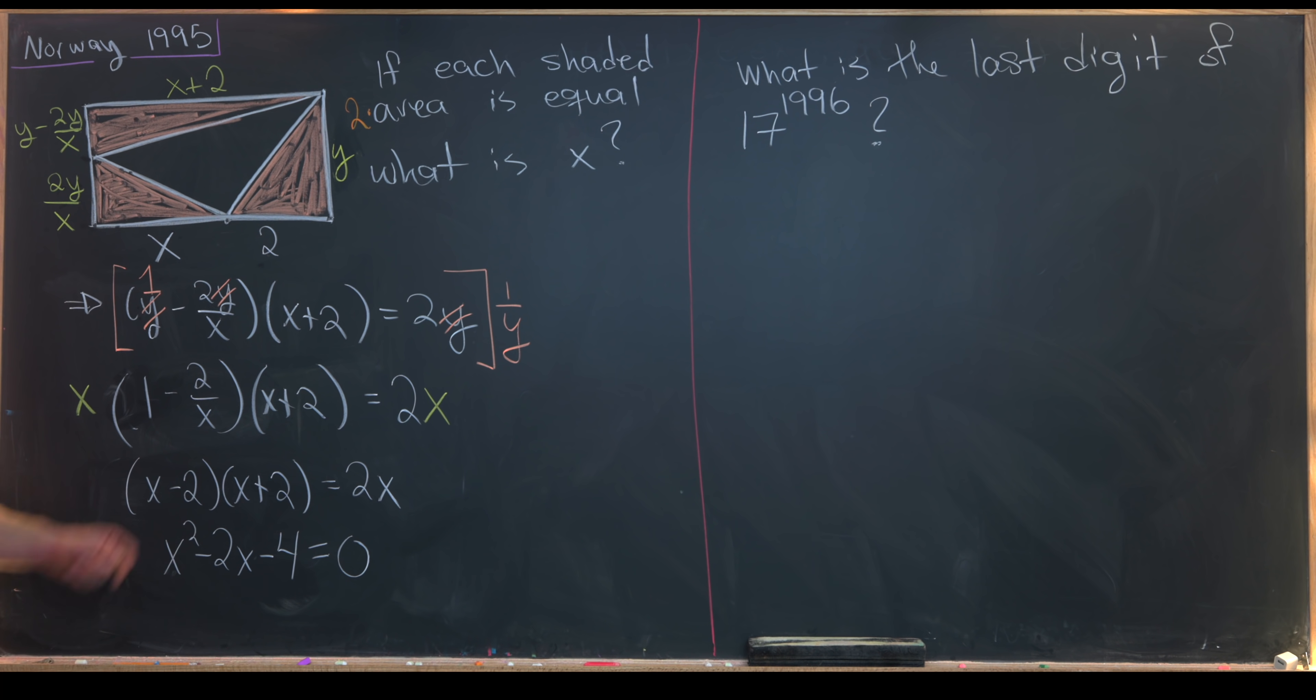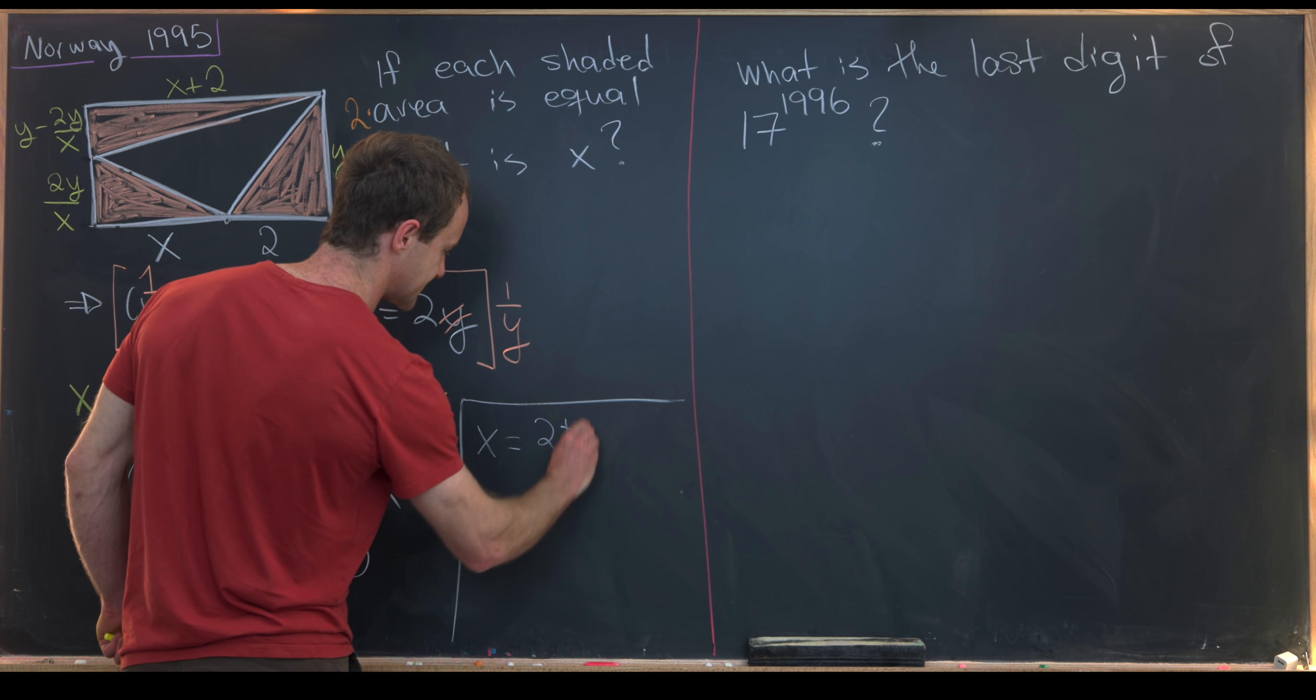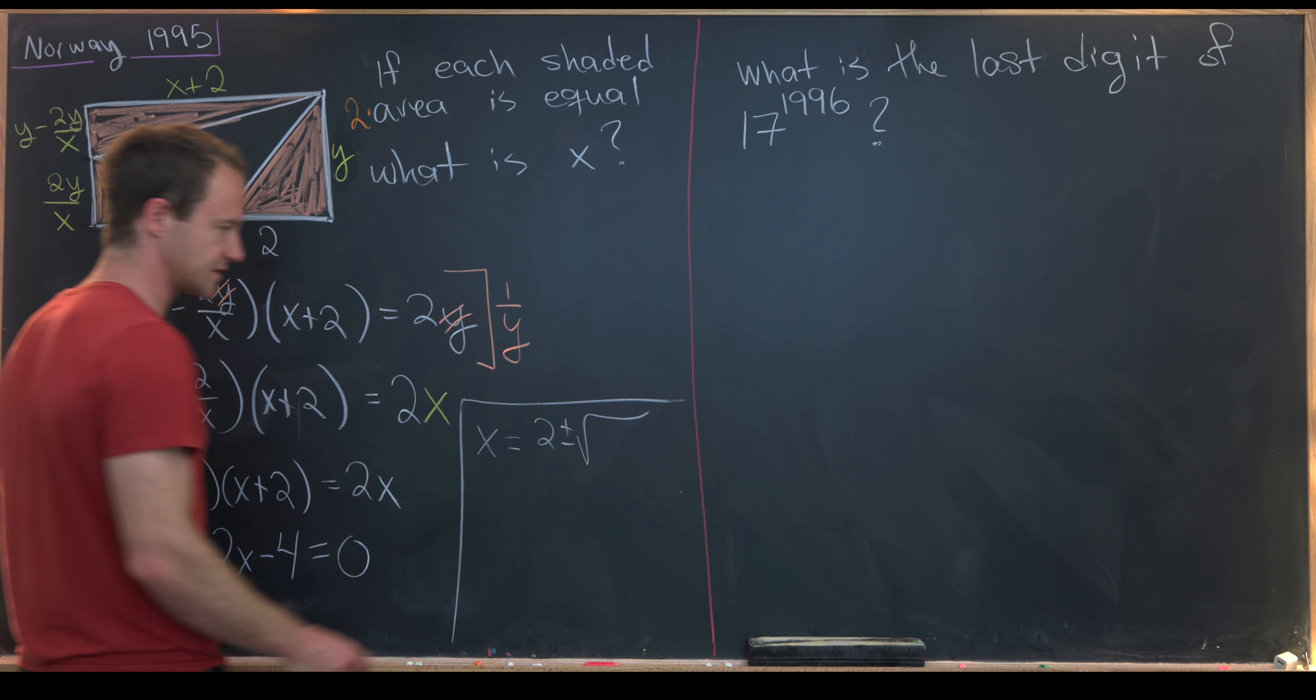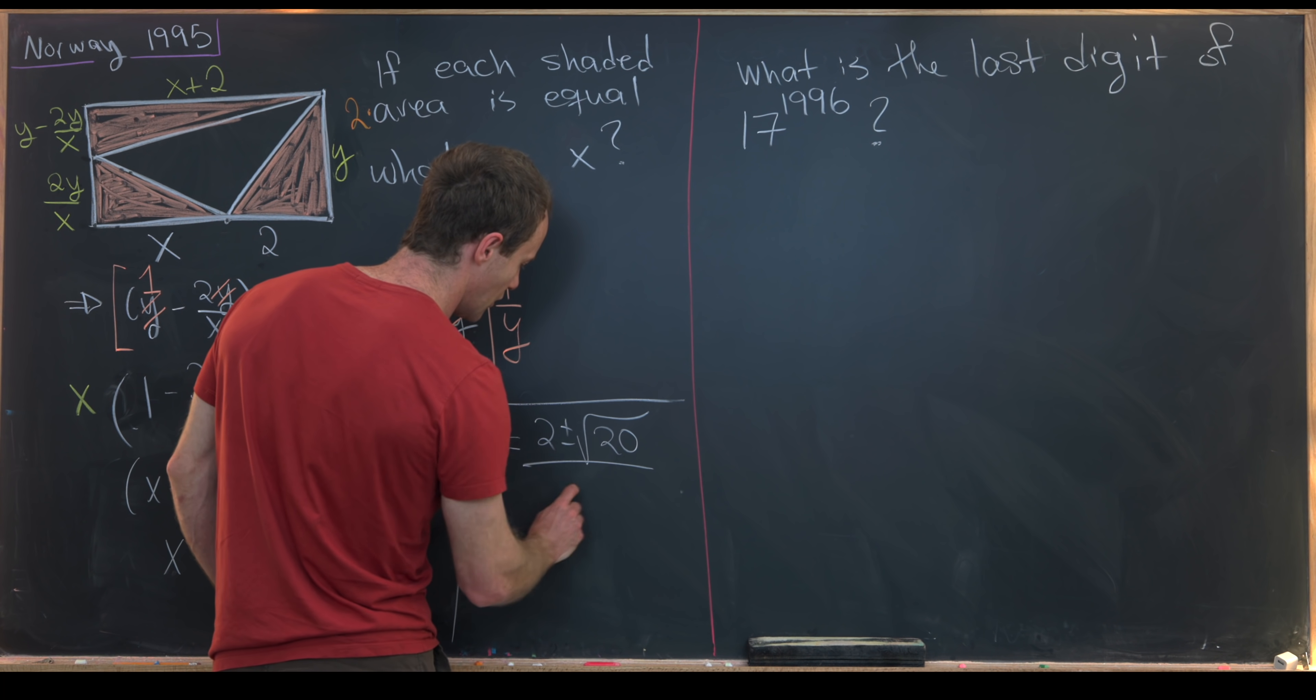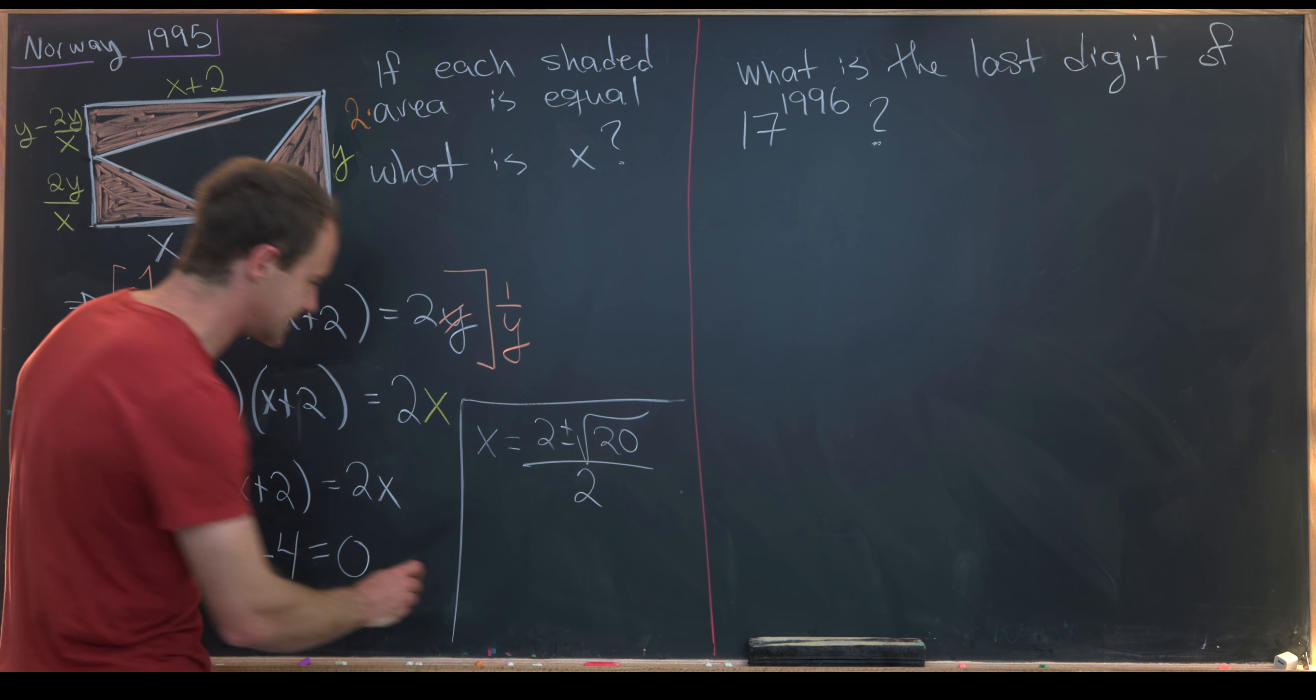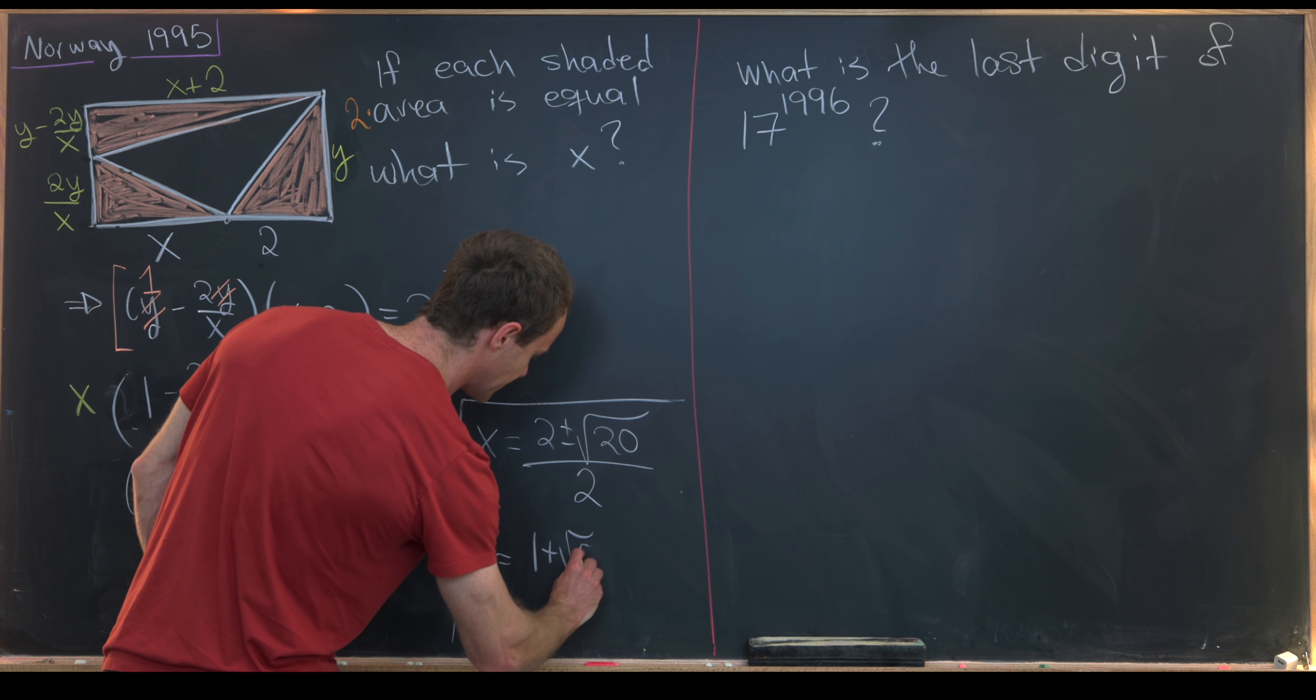Now we can attack this by using the quadratic formula to solve for x. So doing that, we'll see that x equals 2 plus minus the square root of, well it's negative 2 squared minus 4 times negative 4, so that's going to be 20 over 2.